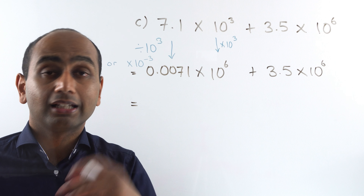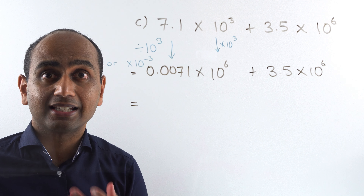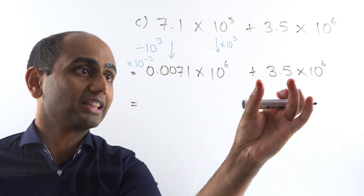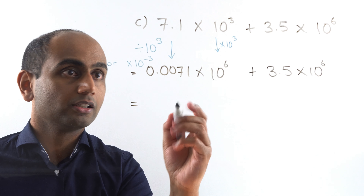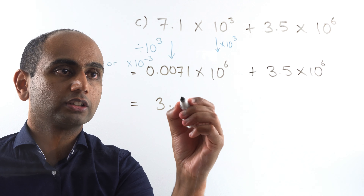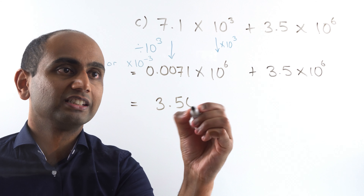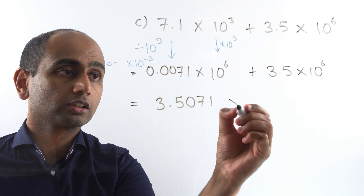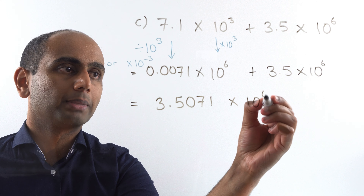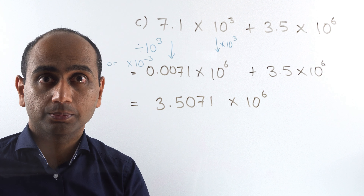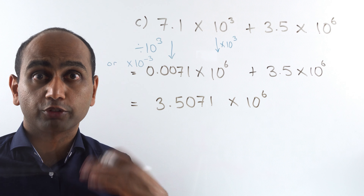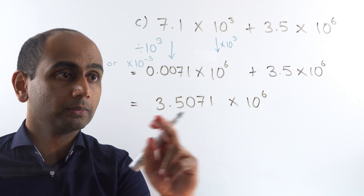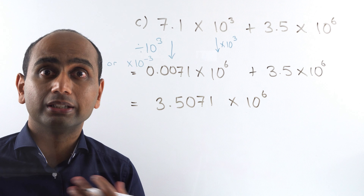How many lots of 10 to the 6 is that altogether? It's 0.0071 plus 3.5, so that's 3.5071 lots of 10 to the power of 6. Let's just check we've got our final answer in standard form — yes we do, so we're done.